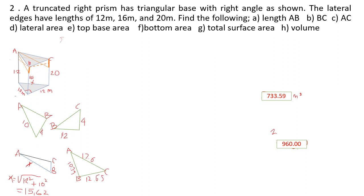Solution: Letter A — EB. EB equals, from the figure, square root of (10 squared plus 4 squared), equivalent to 10.77. Letter B — BC: square root of (12 squared plus 4 squared) equals 12.65.